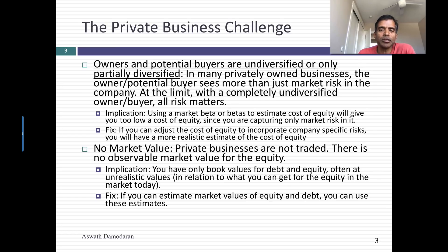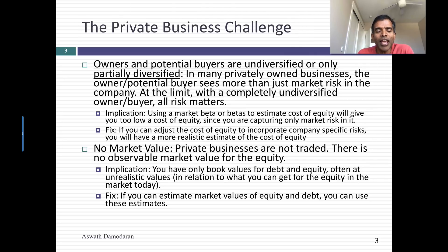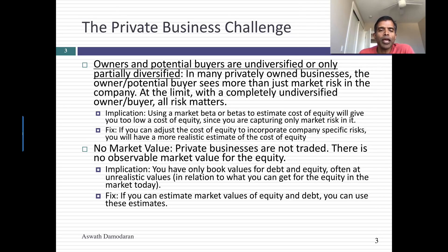Now let's look at the difficulties with private businesses. There are two basic challenges. The first is the owner of a private business tends not to be diversified, and potential buyers also tend not to be diversified. Why? Because they don't have the money. If you run a private business, every dollar of your wealth is often channeled into that business — you don't have a chance to be diversified. The diversified investor assumption breaks down. The other challenge is that with private businesses, there is no market value. You can get a book value of equity and debt, but it's often a meaningless number because it's affected by all the accounting choices you make. So because a private business owner is exposed to most of that company-specific risk that we're assuming away, public company models will underestimate the cost of equity.